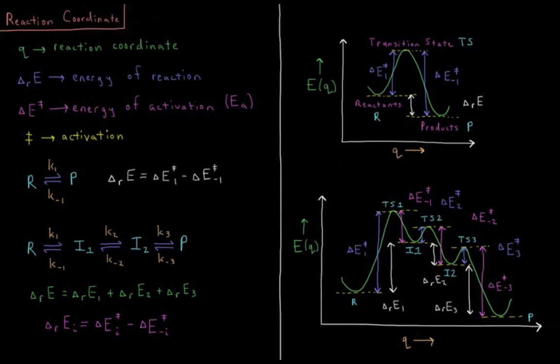This video will discuss the reaction coordinate in chemical kinetics. We're going to define the quantity Q, which we call the reaction coordinate. Q is some quantitative but maybe nebulous or unknown measure of how far our reaction has proceeded towards the products or from the reactants.